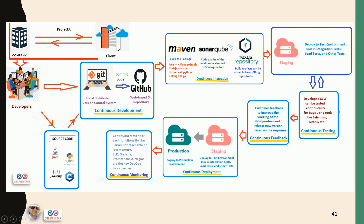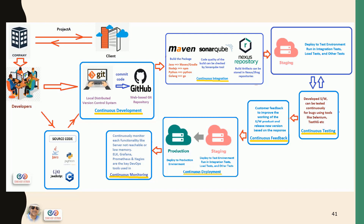Here you can see we have one company and this is the client. The client has given one project to the company — project A. Once the project has been aligned to the company, the company will start working on it. In the initial phase, the company will start gathering information about the project: what is the requirement of the client, what exactly the client is looking for. They will also collect the resources — how many developers will be required. They also need the operation team because you are going to deploy the package into the production environment using DevOps. DevOps is the combination of the development team plus the operation team, so you need both teams. In the initial phase, you need the developers.